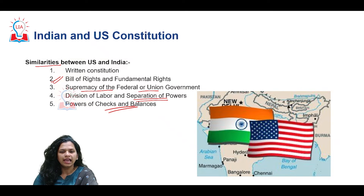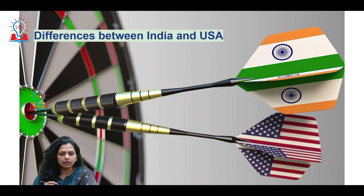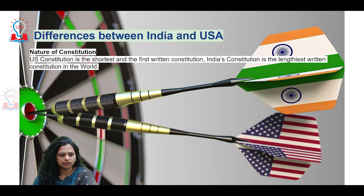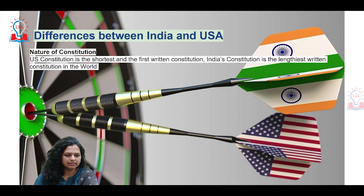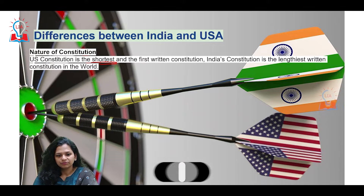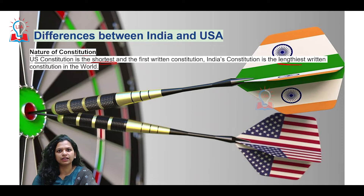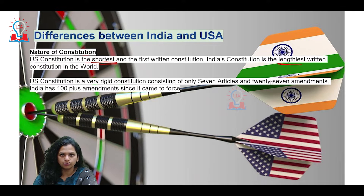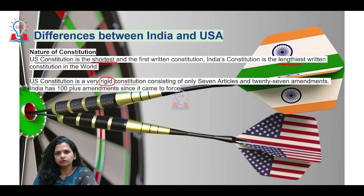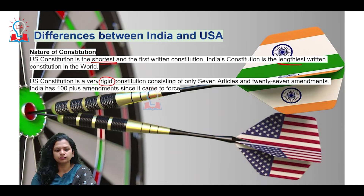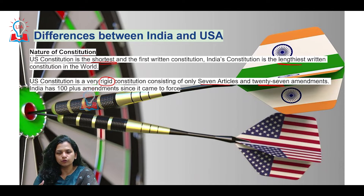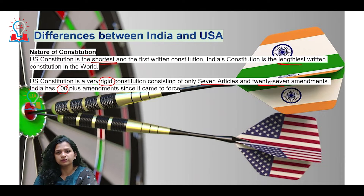When we come to the differences between the two countries, we start from the nature of the constitution — with the United States having the shortest and India having the longest. India's lengthiest constitution has gone through many amendments, additions and subtractions and stands today as the lengthiest constitution of the world. The US constitution, though small, is extremely rigid in terms of how fixed they are to its provisions and principles. It has only seven articles and 27 amendments so far, whereas India has over 100 amendments.